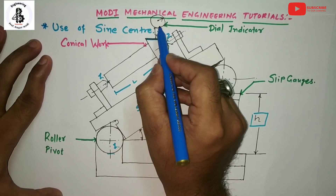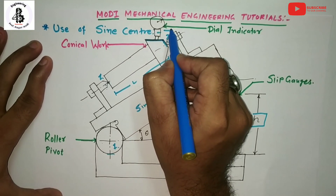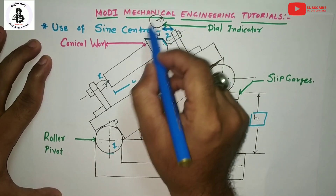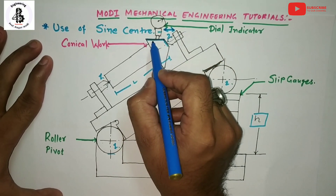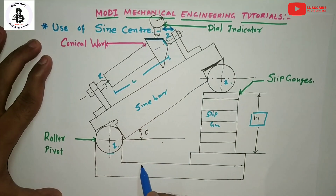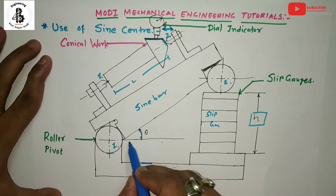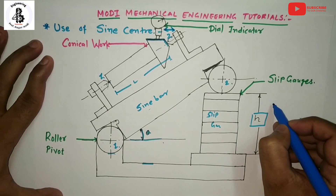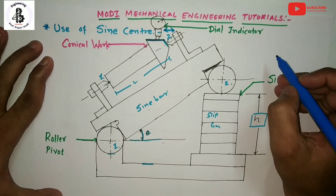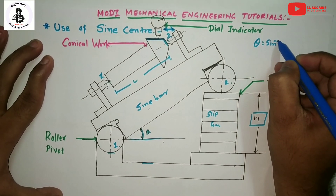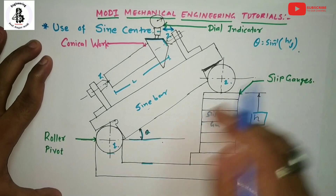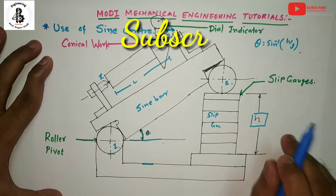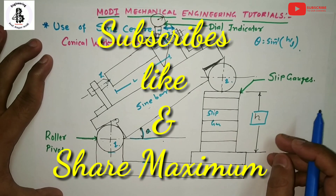The dial indicator moves across the conical surface and should give the same readings throughout, confirming that the surface is parallel to the sine bar setup. The sine bar makes an angle theta with the horizontal axis, and using the number of slip gauges of height h, theta is equal to sine inverse of h upon L. This is the general application of the sine center for measurement of the angle of a conical workpiece. Subscribe and share Modi Mechanical Engineering Tutorials — thank you very much.